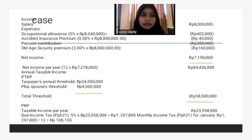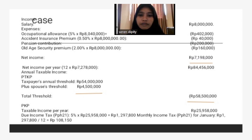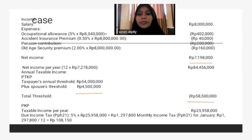We then move on to the PTKP (non-taxable income threshold), which includes 54 million for himself and 4,500,000 for his wife, totaling 58,500,000. We deduct the net annual income by the total PTKP to find the PKP (taxable income), which equals 25,958,000 rupiah.